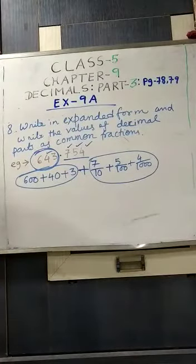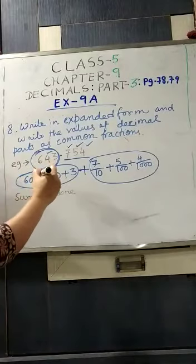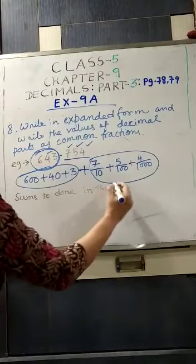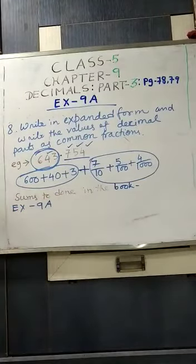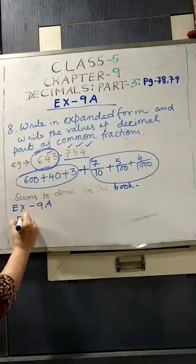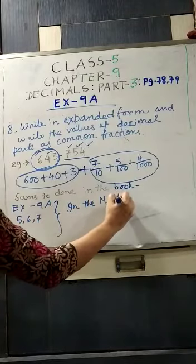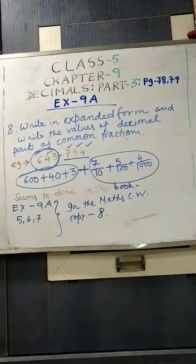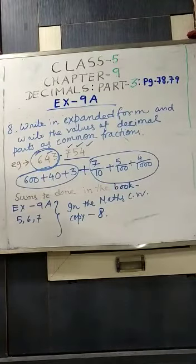Clear? Now I am giving you the sums to be done in the book, exercise 9A, 5, 6, 7. And in the maths class copy, 8. So I hope that you have understood. You will see the whole class again and again. I hope that you will be able to understand. So students, today up to this much. We will continue this chapter in our next class. Till then, Namaskar students.